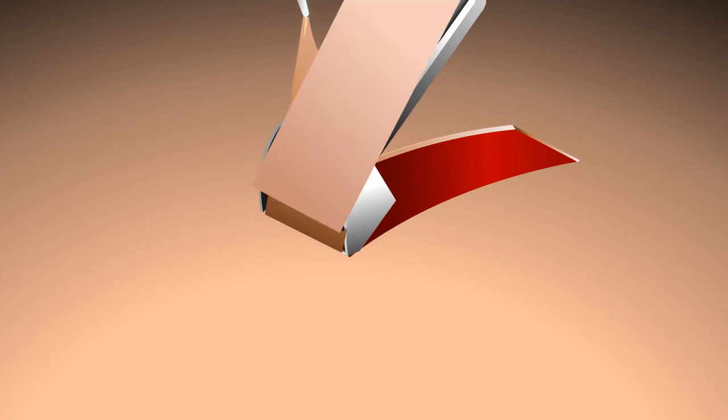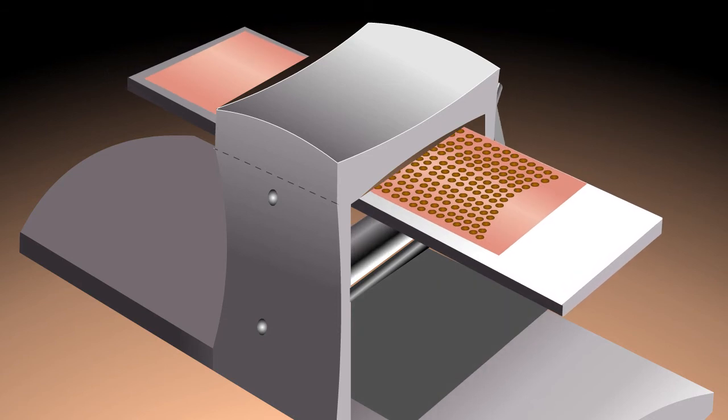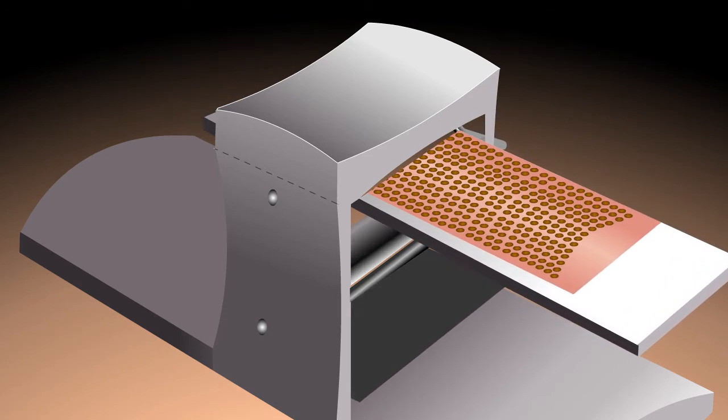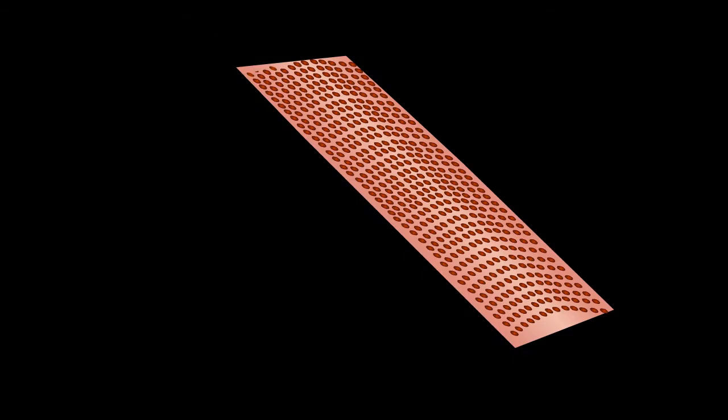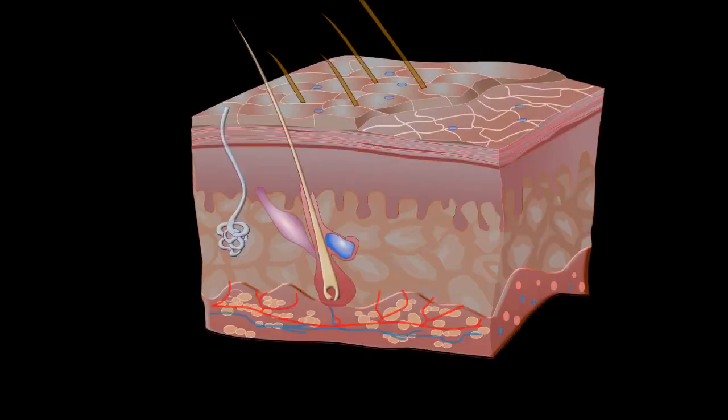A piece of healthy skin is detached from one part of the body and transferred to the affected area. New cells grow from the graft and cover the damaged area with fresh skin.